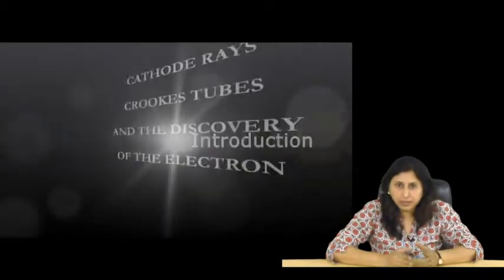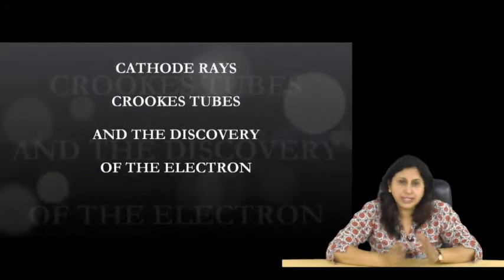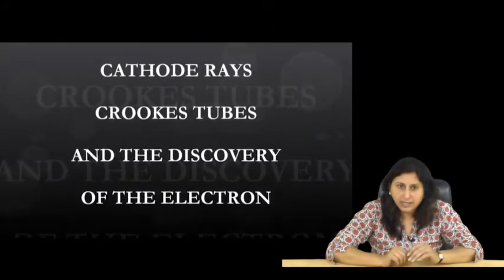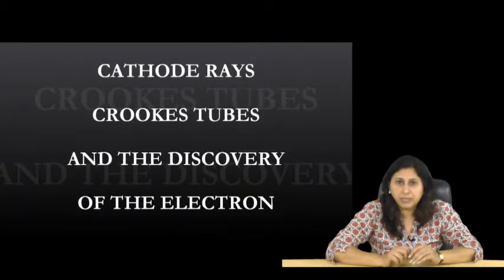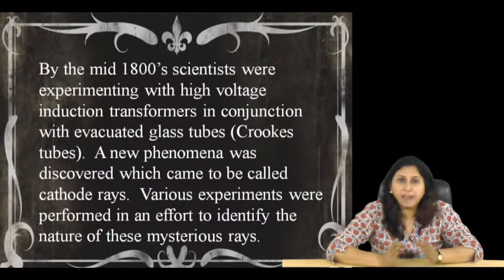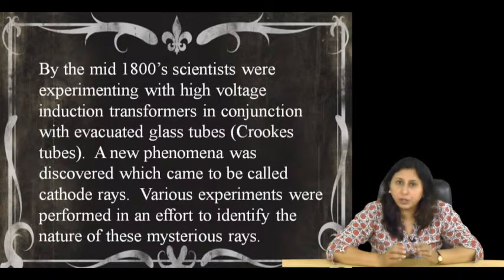Let us start off with how the cathode rays came into being and how this led to the discovery of the electron. By the mid-1800s, scientists were experimenting with high-voltage induction transformers in conjunction with evacuated glass tubes, Crookes tubes.